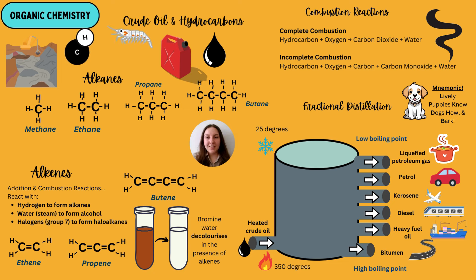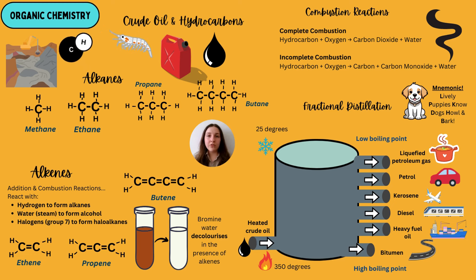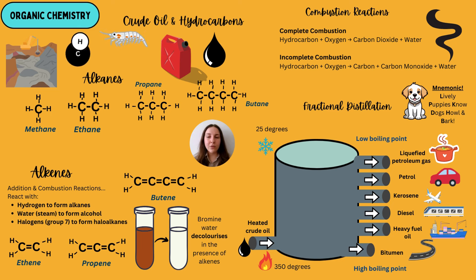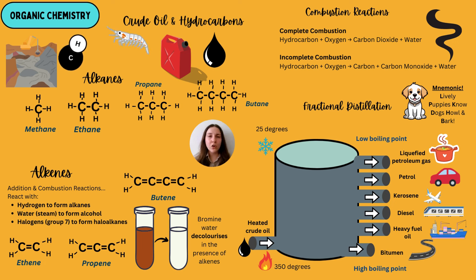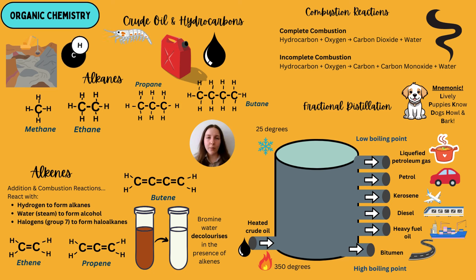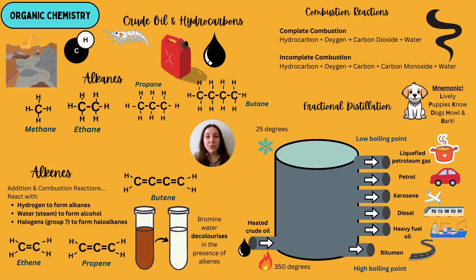When we burn fuels, there are two versions of combustion. Complete combustion occurs when a hydrocarbon is burnt in a plentiful supply of oxygen, producing carbon dioxide and water. Incomplete combustion occurs when there's not enough oxygen, producing the toxic gas carbon monoxide — odourless and colourless but poisonous and dangerous. Carbon soot, a particulate that can cause asthmatic and respiratory problems, is also produced. Water is also formed in incomplete combustion, making it more hazardous than complete combustion.